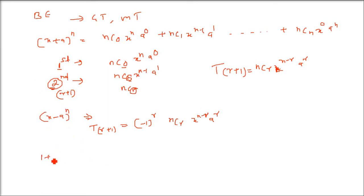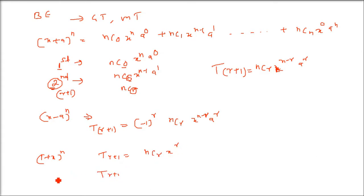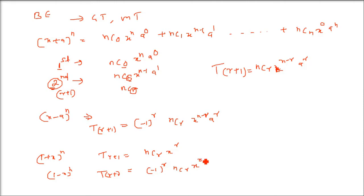For (1 + x)^n, the general term T(r+1) is nCr · x^r. For (1 - x)^n, the general term T(r+1) is (-1)^r · nCr · x^r.